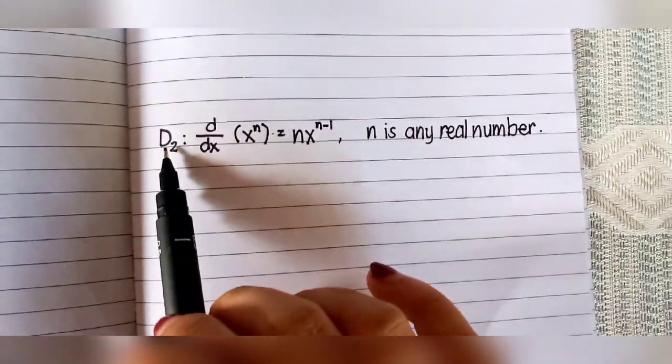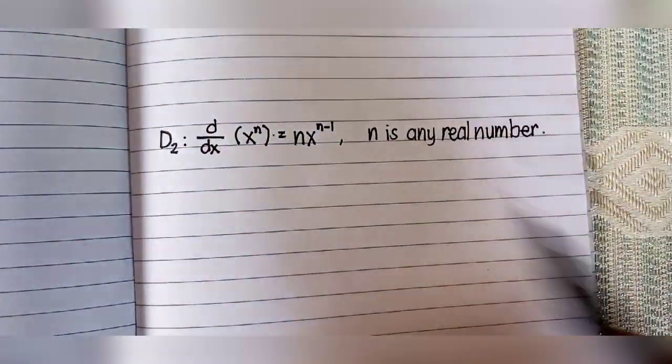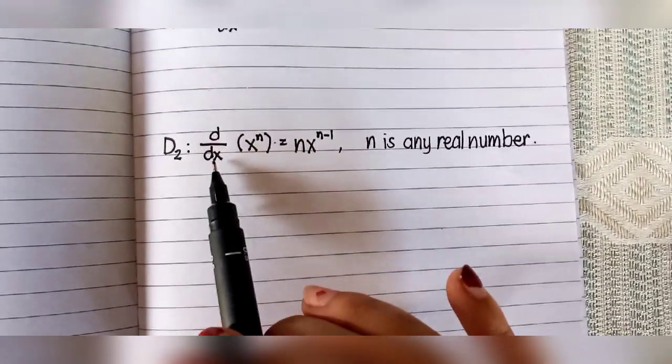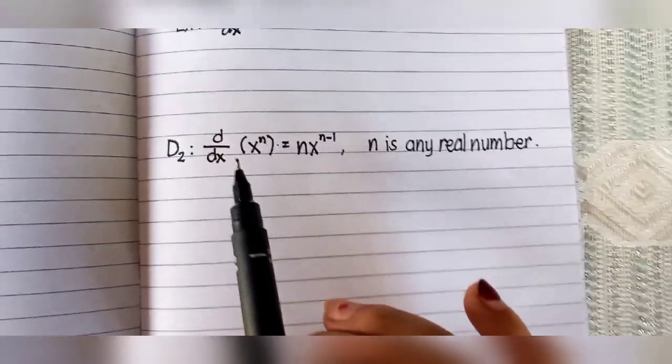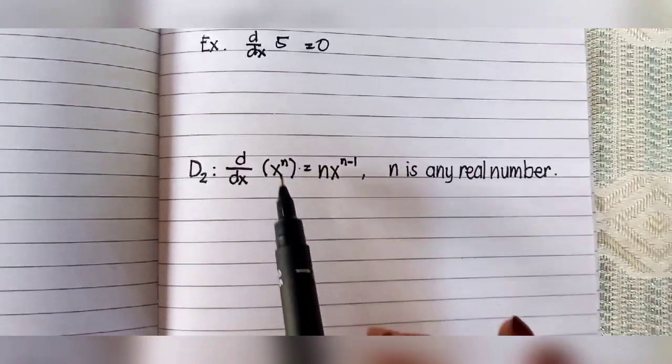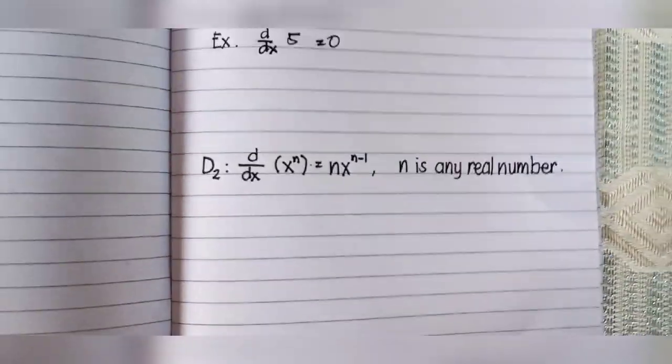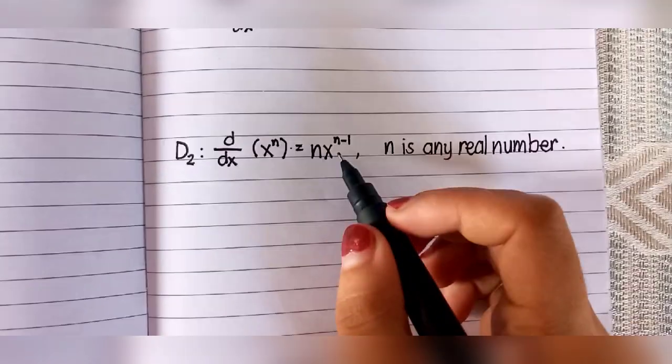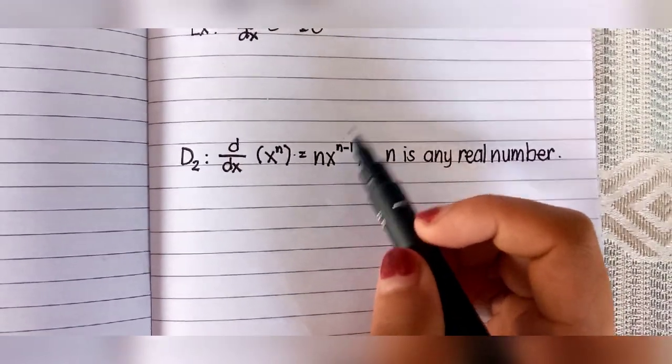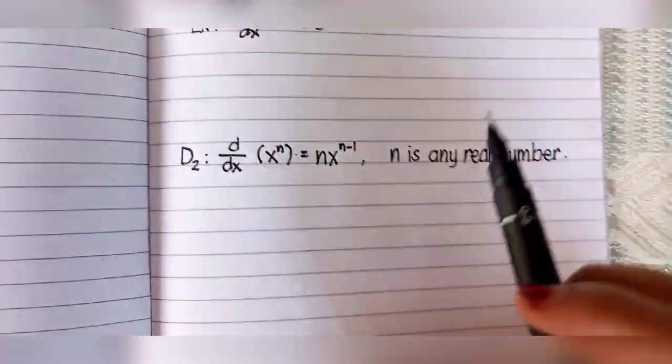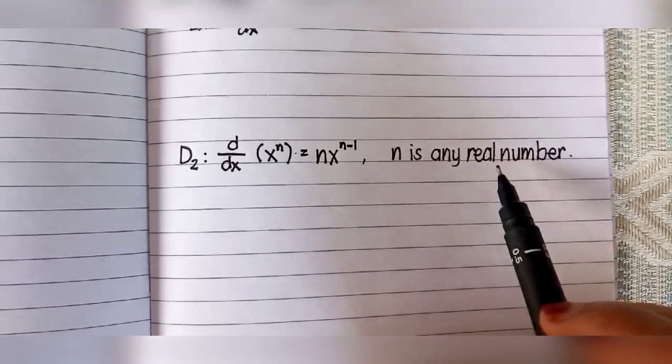Next is D2: d/dx of X raised to N equals N times X raised to N minus 1, where N is any real number.